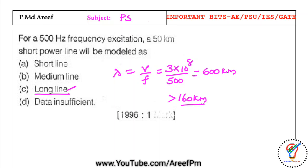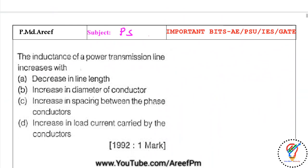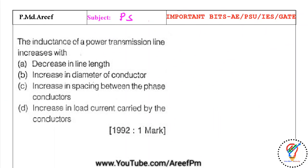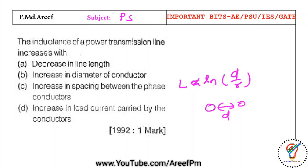The last question for this session: the inductance of a power transmission line increases with what? Since L ∝ ln(D/r), when we increase the spacing between the phase conductors, the distance D increases, and therefore the inductance of the power transmission line increases. So the right option is increase in the spacing between the phase conductors.